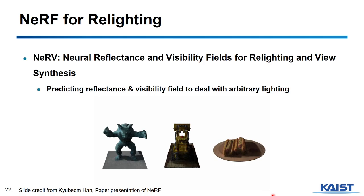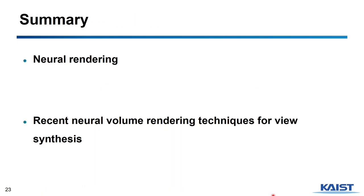Another paper is a re-lighting version of NeRF. In this model, the network predicts reflectance and visibility, so it can generate scenes under different lighting environments. To summarize, we learned about the concepts of neural rendering, and we learned about the NeRF paper, which uses neural radiance fields and volume rendering for view synthesis.